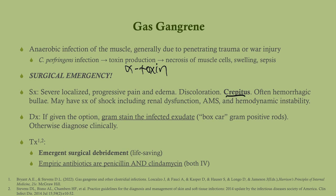Patients with gas gangrene can also show hemorrhagic bullae with a distinct appearance, and symptoms of shock including hemodynamic instability. If given the option, gram stain the infected exudate and look under the microscope. With Clostridium you'll see gram-positive purple rods lined up in boxcar formation — they look like a train. You can also diagnose clinically given an obvious appearance, since this is an emergency. Once you make the diagnosis, send the patient for emergent surgical debridement — that can also be cultured — and provide empiric antibiotics.